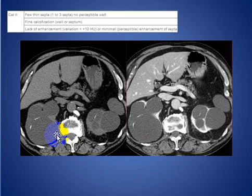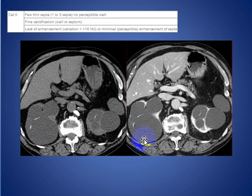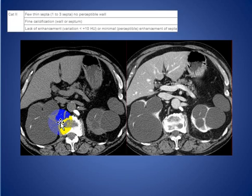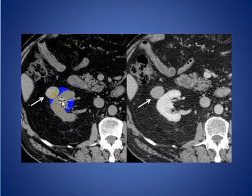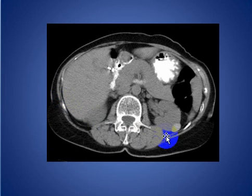Here we see a non-contrast study with thin wall calcification on a cyst on the right side, and after enhancement there is no enhancement seen. Another case: this is a hyperdense cyst in the right kidney, less than 3 cm — this is Type 2 Bosnian classification. Here we see another hyperdense cyst on the left kidney.